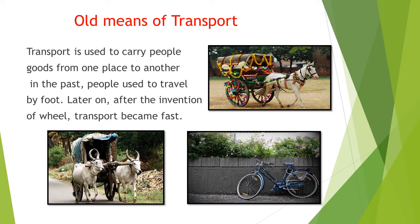These are the means of transportation called old means of transportation. In old times, people used to go from one place to another with the help of simple machines like wheel and axle, and after that they invented bull cart and camel cart so they could travel from one place to another with their goods.